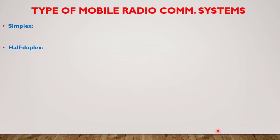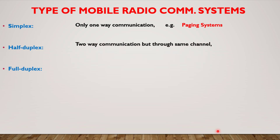There are three types of mobile radio communication systems: simplex, half-duplex, and full-duplex. In simplex communication systems you have communication in only one direction — for example, paging systems — where you just receive messages but cannot acknowledge them. In half-duplex communication systems you have two-way communication but through the same channel, meaning the same frequency spectrum is used for communication. The example is push-to-talk and release-to-listen.